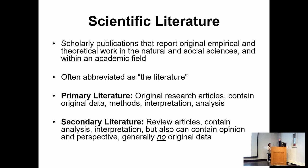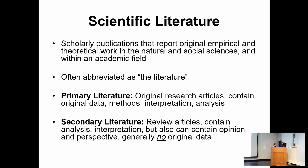Literature refers to scholarly publications that report original work in an academic field. There are two major types. Primary literature is where people publish original research data — when you go to a lab, produce new data, and publish it, that is primary literature. Secondary literature refers to review articles, which do not present original data but cite a lot of other people's work and give a nice summary about that field.